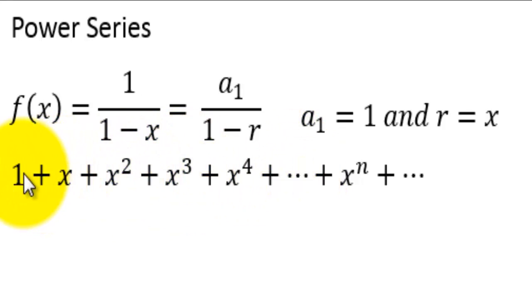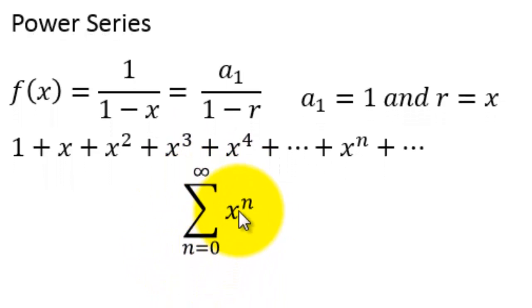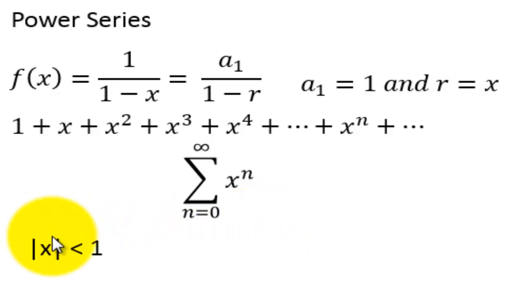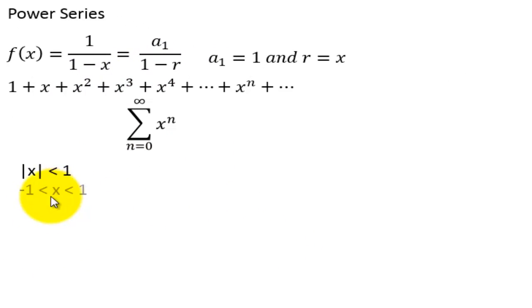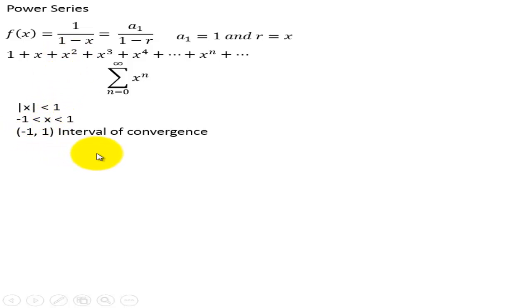Here's why it's called the power series — because we have the powers of x all the way up to x to the nth. Here it is in summation notation: n equals 0 to infinity of x to the n. But in order for this to converge, the absolute value of x has to be less than 1. So negative 1 is less than x is less than 1. The interval of convergence is from negative 1 to 1 — the value works as long as x is a fraction.